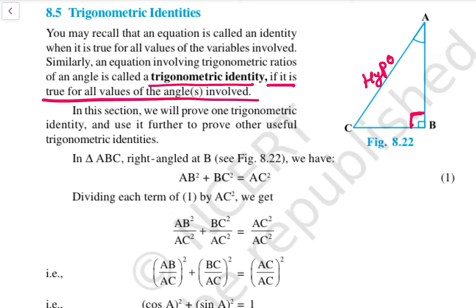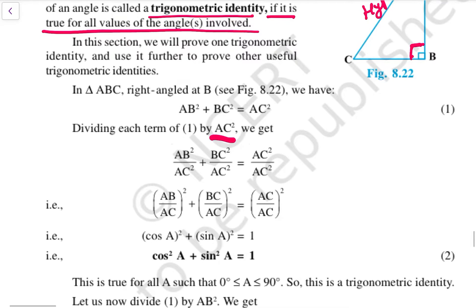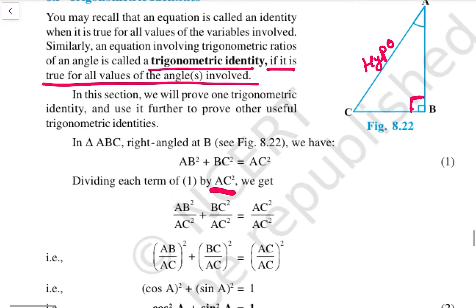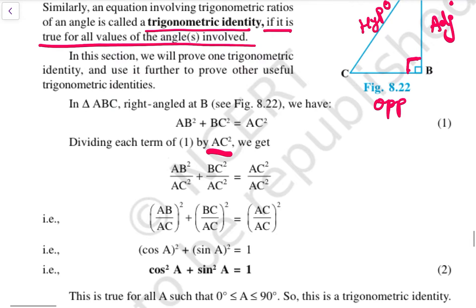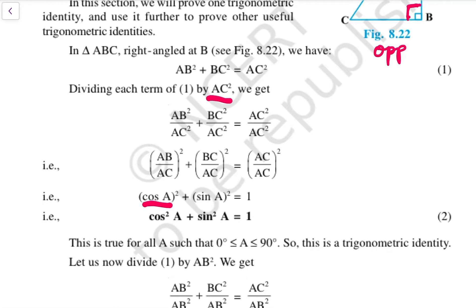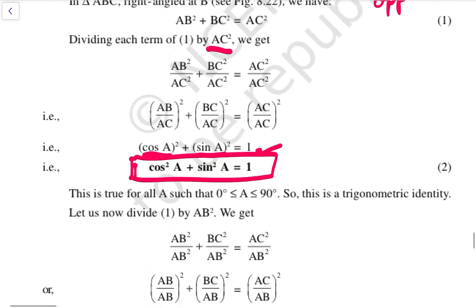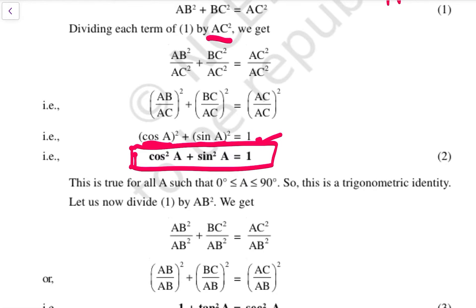First, we divide the whole equation by AC². After solving, we get AB²/AC² + BC²/AC² = 1. Observing for angle A, AB/AC is cos A and BC/AC is sin A, and AC/AC is 1. So we get the first trigonometric identity: cos²A + sin²A = 1. This holds true for all values where 0 ≤ A ≤ 90.